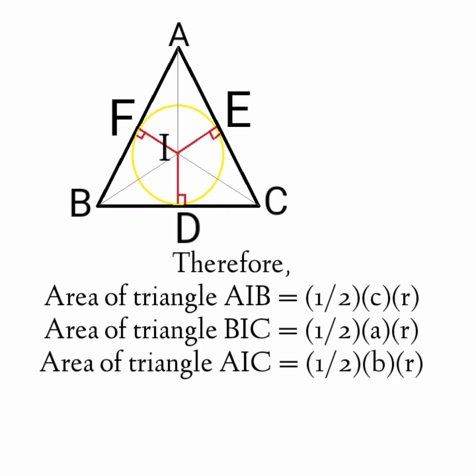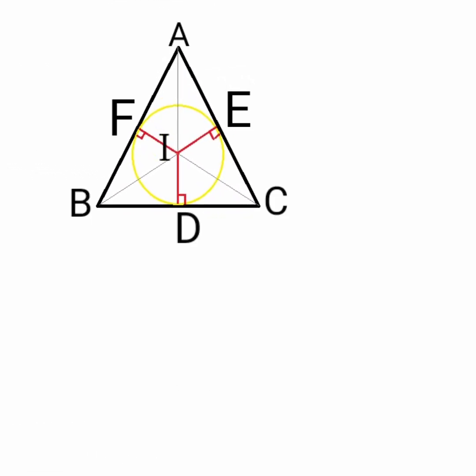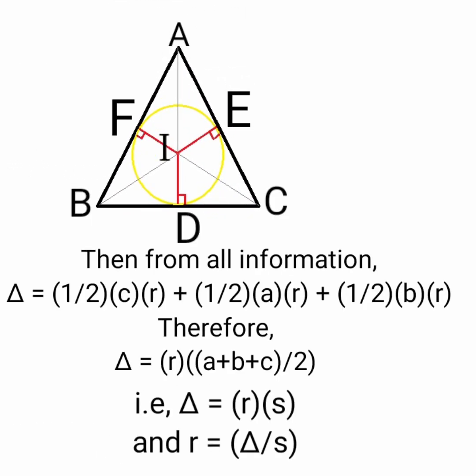Similarly, the area of triangle BIC equals half times A times r, and the area of triangle AIC equals half times B times r. Then, combining all this information, delta equals the area of triangle ABC, which equals the area of triangle AIB plus the area of triangle BIC plus the area of triangle AIC.